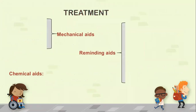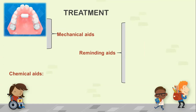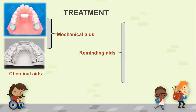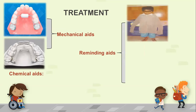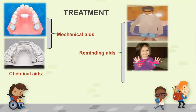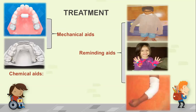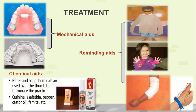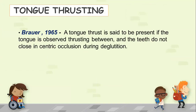Treatment of thumb sucking includes mechanical aids, reminding aids, and chemical aids. Mechanical aids include removable and fixed appliances like palatal cribs, oral screen, hay rakes, bluegrass appliance, and quad helix. Reminding aids include long sleeves, gloves covering the thumbs, pins, and adhesive tapes to restrain movement of the hand and digit into the mouth. A thumb guard is most commonly used as a reminding aid. Chemical aids include quinine, asafoetida, pepper, castor oil, and Femite — these chemicals are applied over the thumb to terminate the habit.